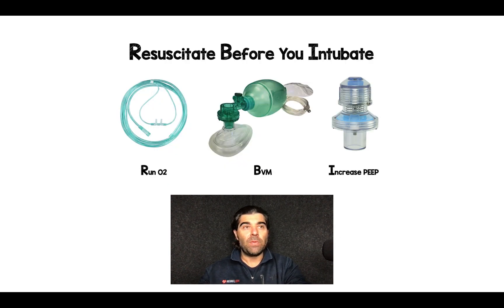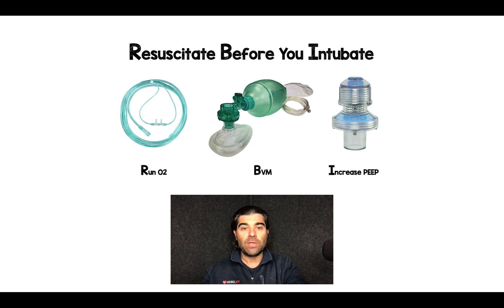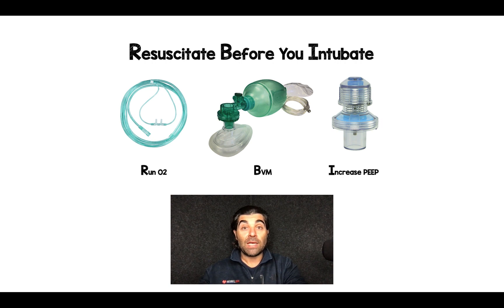I've created an acronym for patients with shunt or dead space physiology based on 'resuscitate before you intubate.' First, run O2 via nasal cannula. Switch over to a bag valve mask and continue that flush rate oxygen from the non-rebreather, attached now to the bag valve mask. Then increase PEEP with a PEEP valve — I'll usually turn this up to 10 or 15. A bag valve mask with a good mask seal and a PEEP valve is going to be the best amount of PEEP you can get to help recruit these atelectatic alveoli.